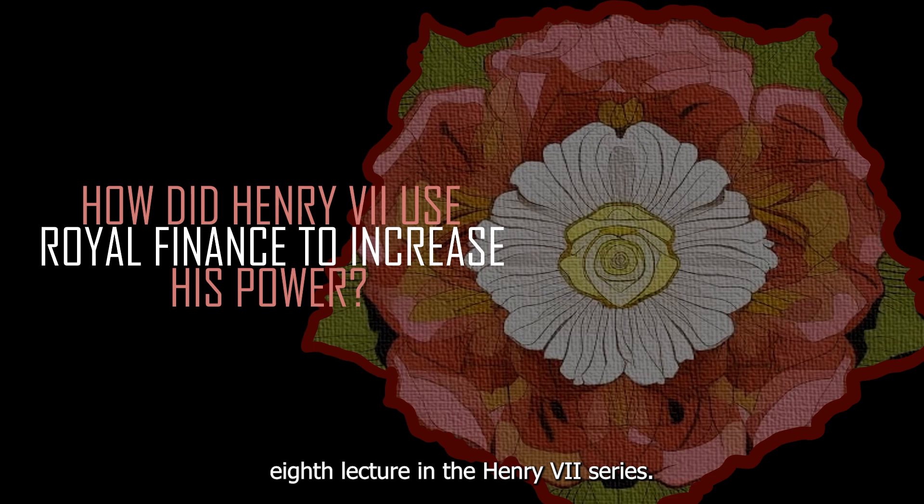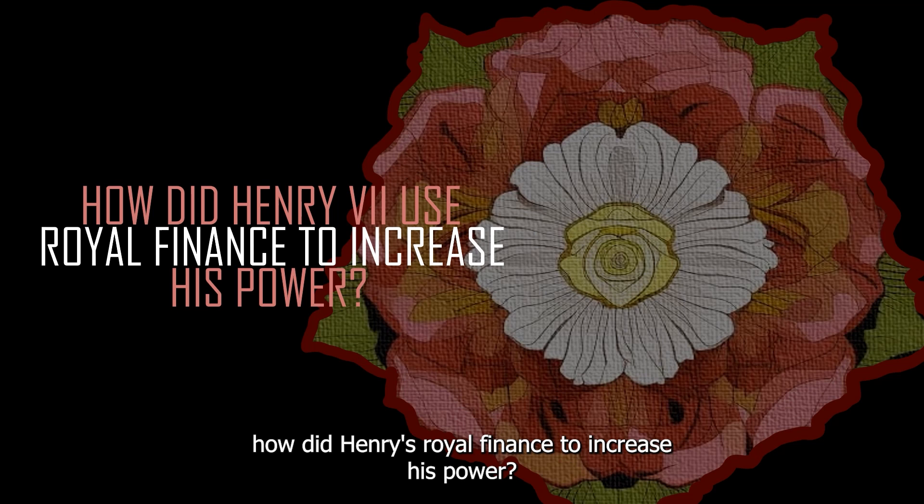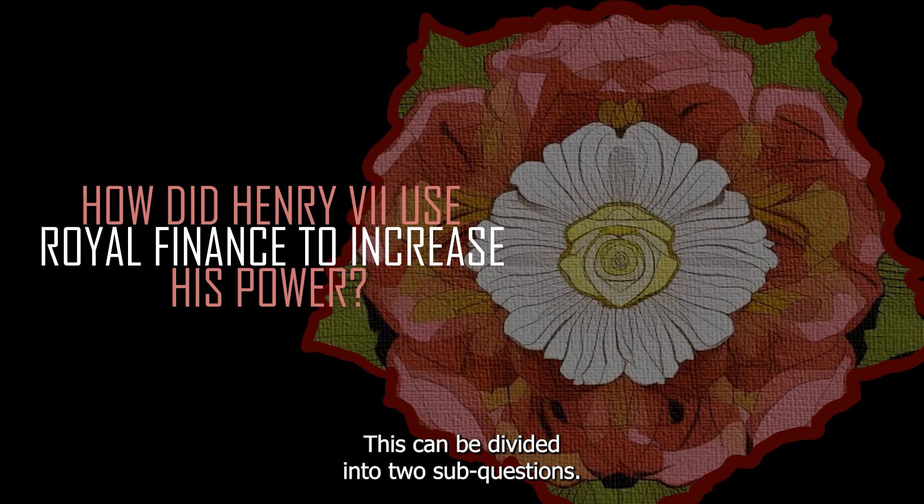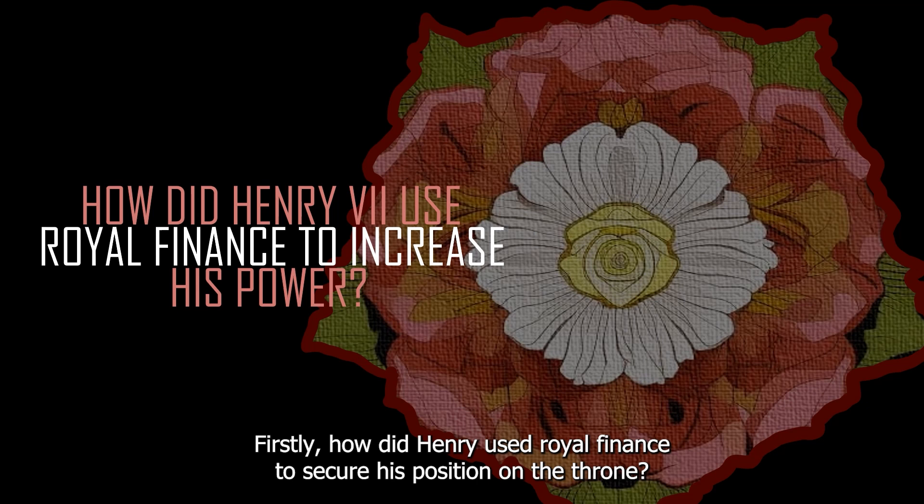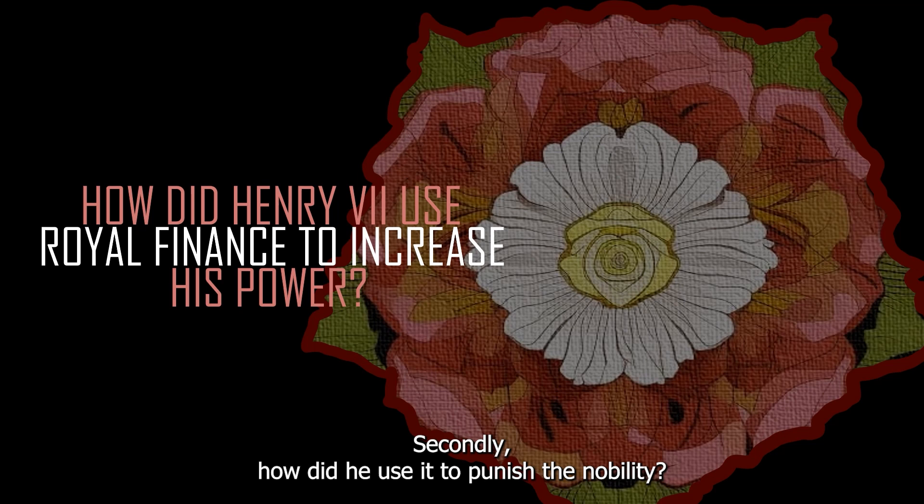Welcome to the 8th lecture in the Henry VII series. In this lecture we will examine the question of how did Henry use royal finance to increase his power? This can be divided into two sub-questions: firstly, how did Henry use royal finance to secure his position on the throne, and secondly, how did he use it to punish the nobility?